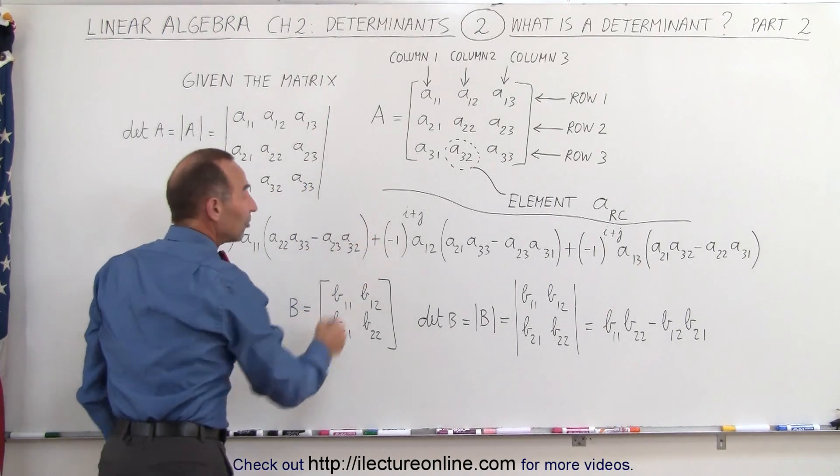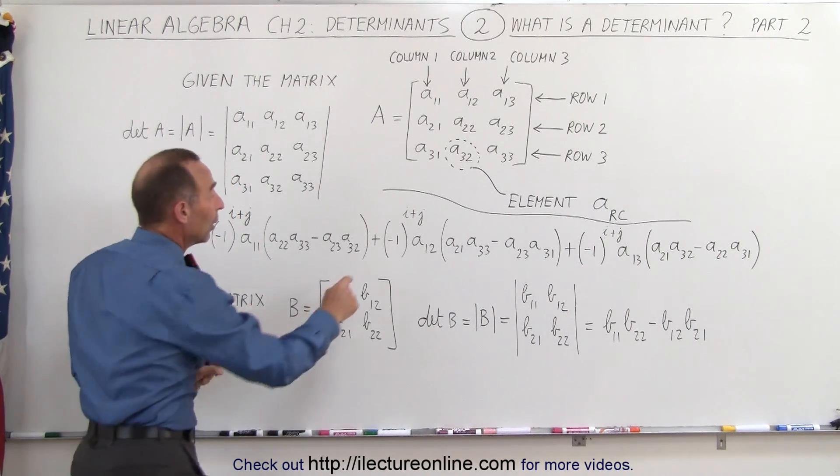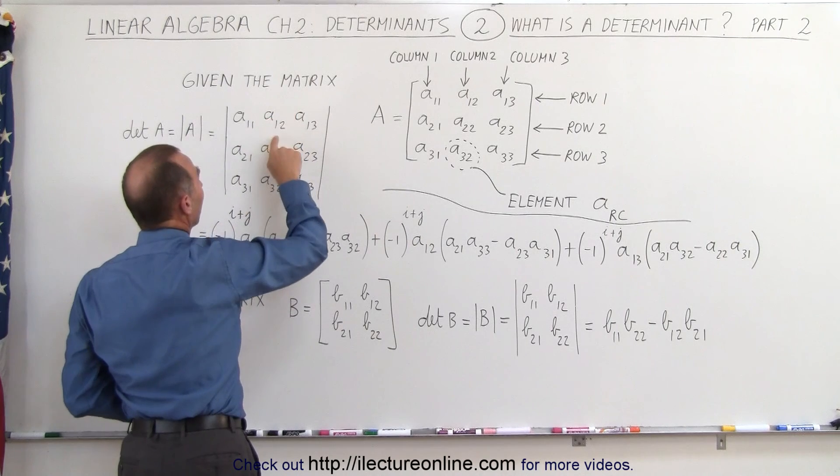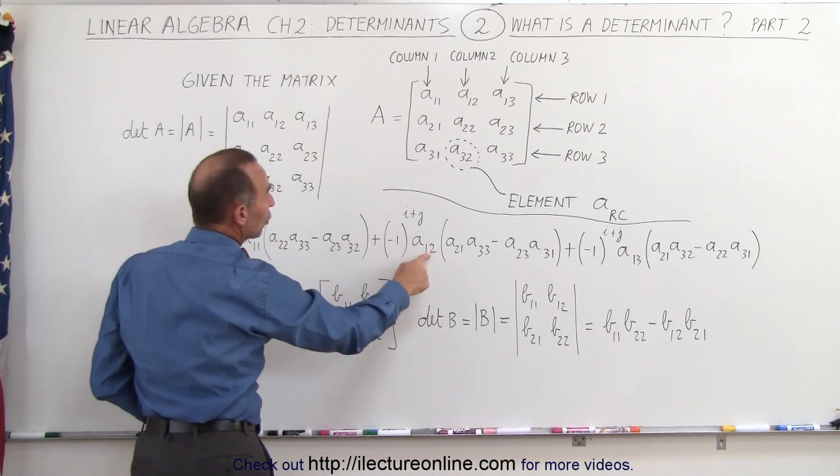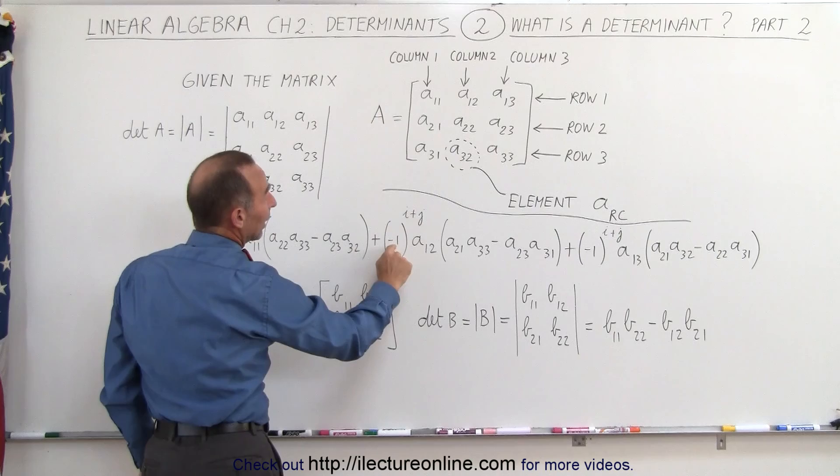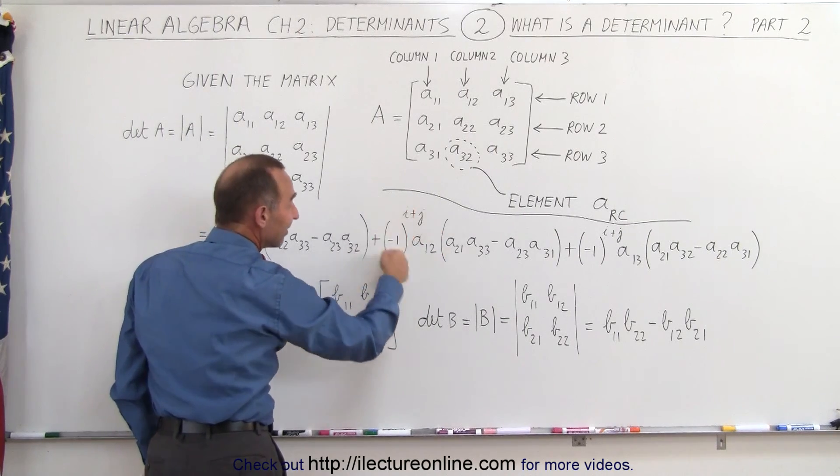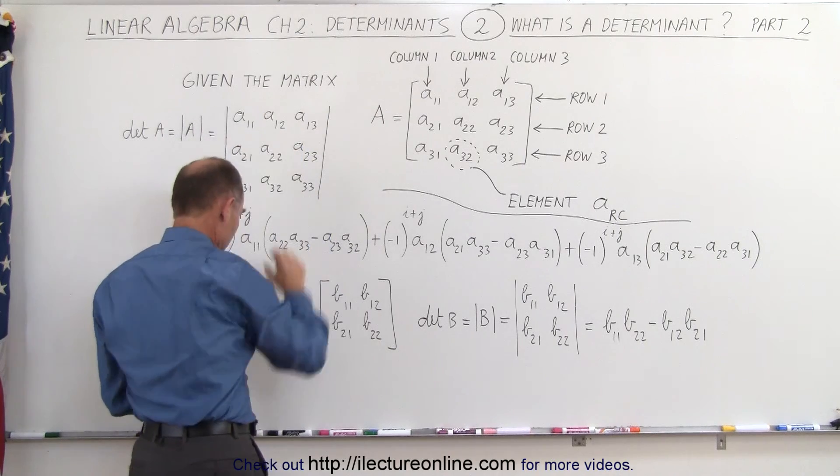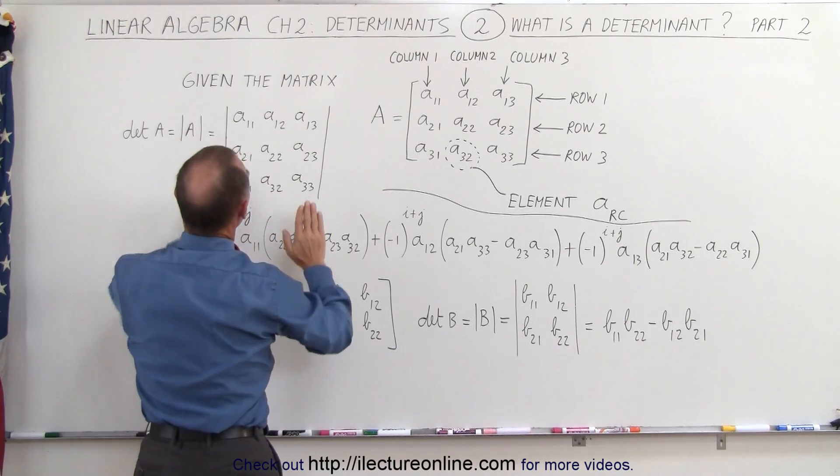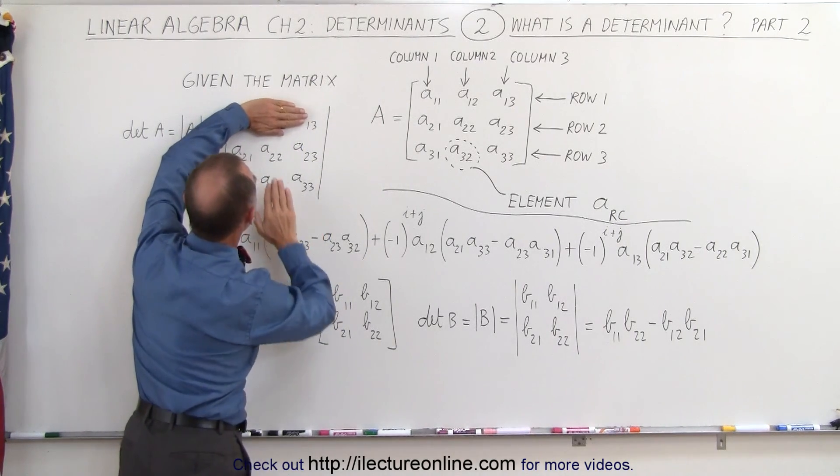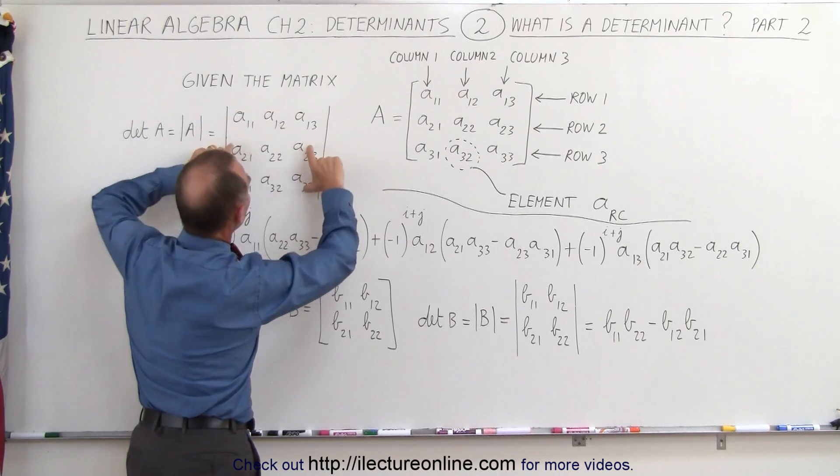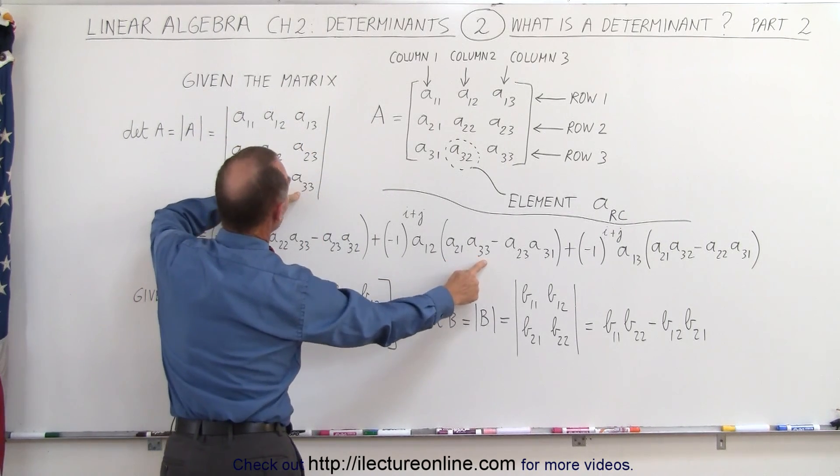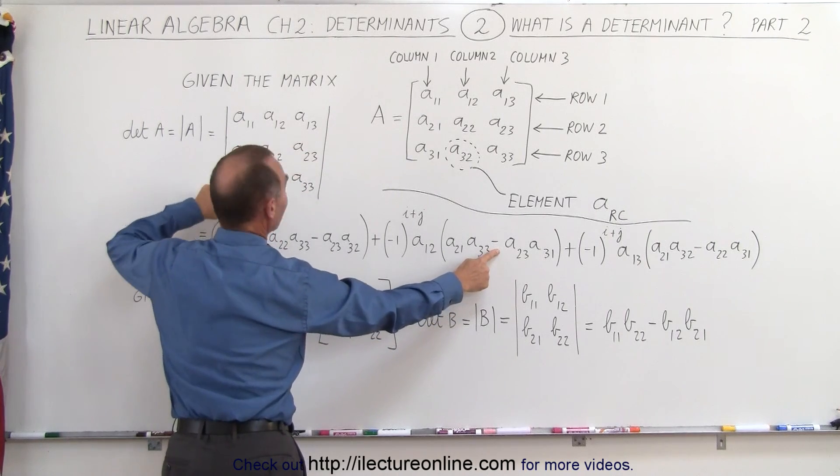Then you go plus, again, negative 1 raised to the I plus J power, because now we take the second element, and we have I and J, that's 1 and 2, so 1 plus 2 is 3, so minus 1 to the third power makes this a negative 1. You take this element right here, and you multiply it times, well, when you get rid of this row and this column, then you're left with those four elements. So you get A21 times A33 minus A23 times A31.